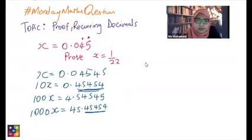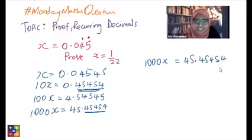So if we were to do 1000x equals 45.45454 and 10x equals 0.45454, then we minus these two equations.